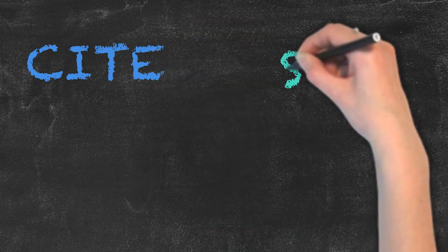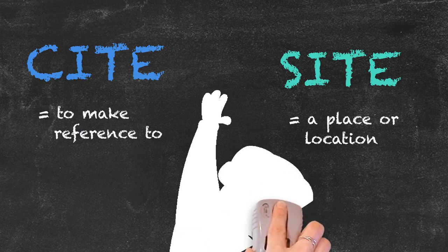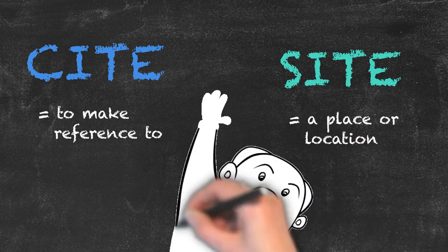So remember, cite is a verb and makes reference to something or someone, and site is a noun and refers to a location. That's it for today and see you next time.